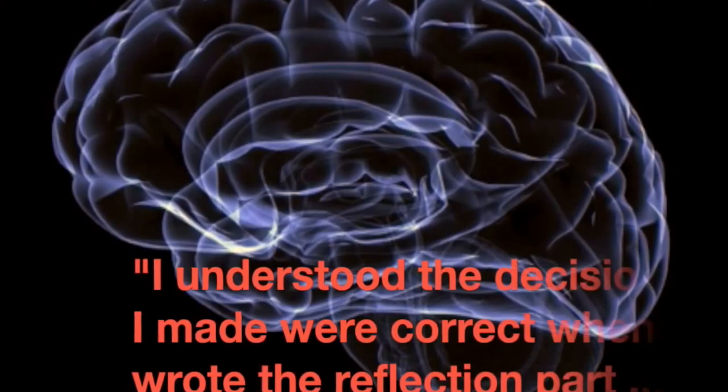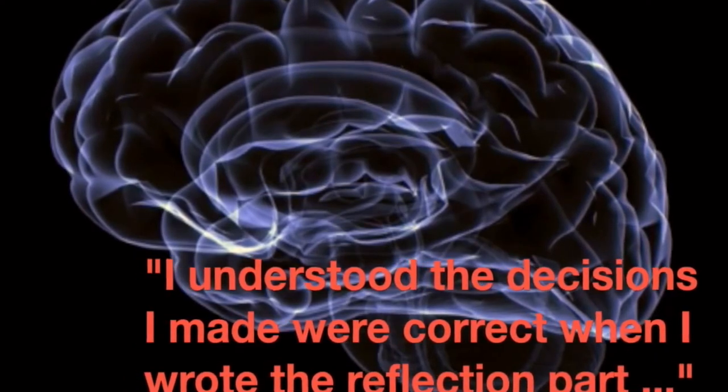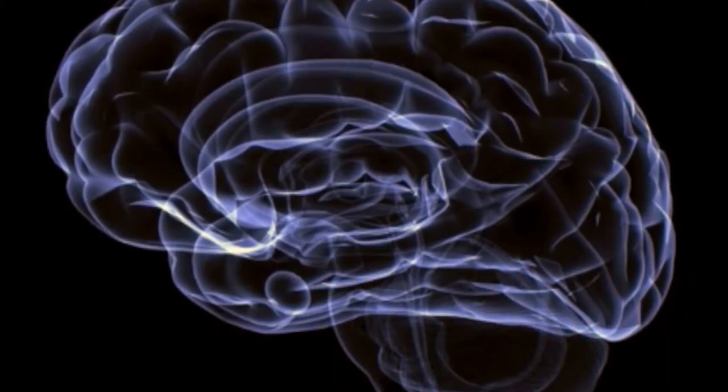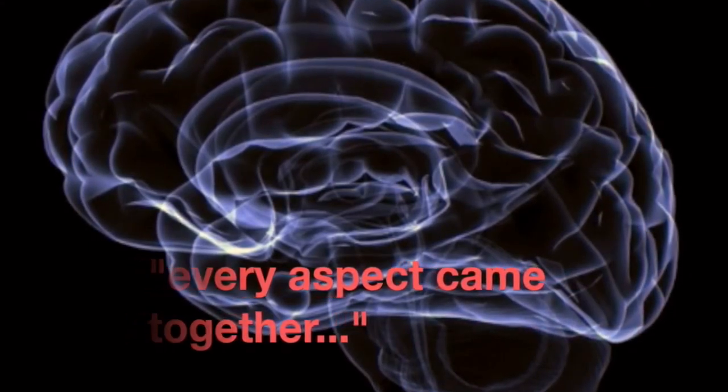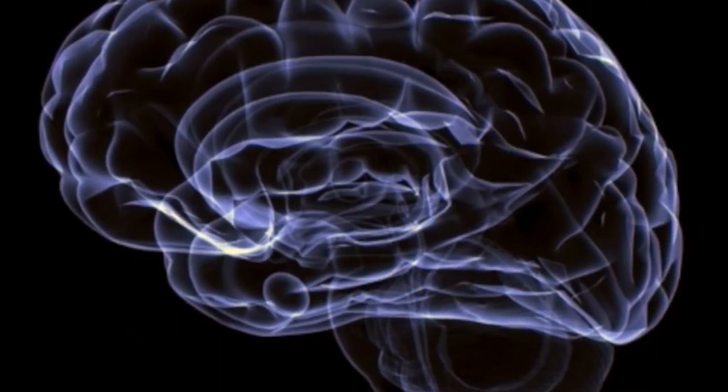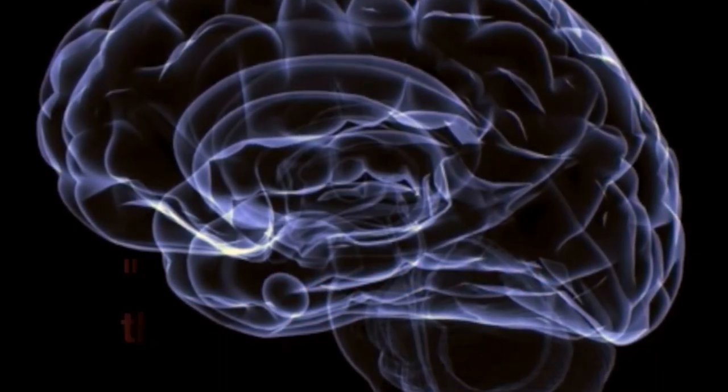I understood the decisions I made were correct when I read the reflection part of the video, because it showed me how every aspect I chose came together to make my instructional video effective. Then when I began to create Project 2, I chose to look at the course outcomes before writing, so that I could create my project out of the outcomes.